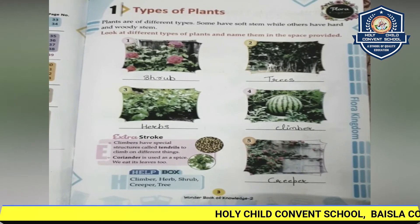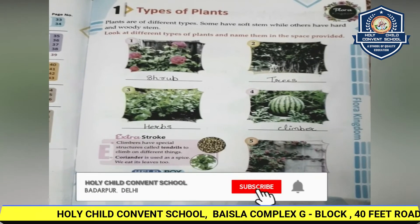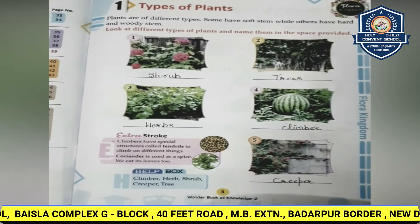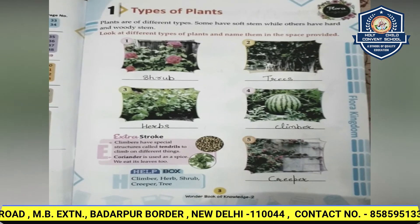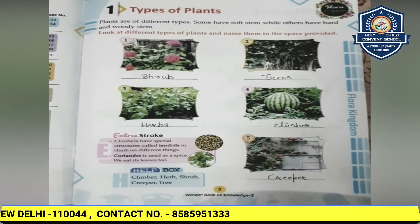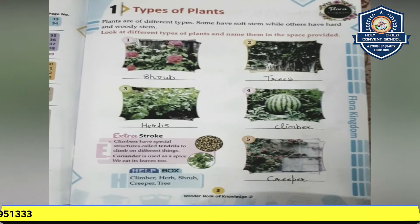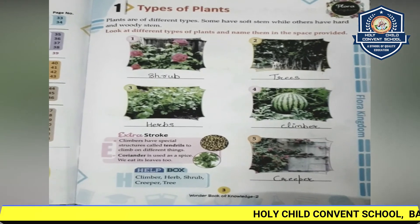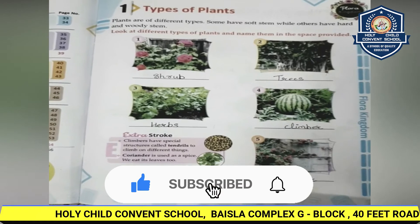Now let us learn about the third type of plant — herbs. Plants like coriander leaves are known as herbs. Herbs are flowering plants whose stems grow above ground and are not woody. They are not woody — they have soft stems.